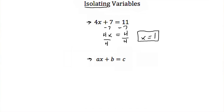The first step we did was we subtracted 7. Well, 7 in this case is our b, so we would subtract b from both sides, and we would end up with ax is equal to c minus b.